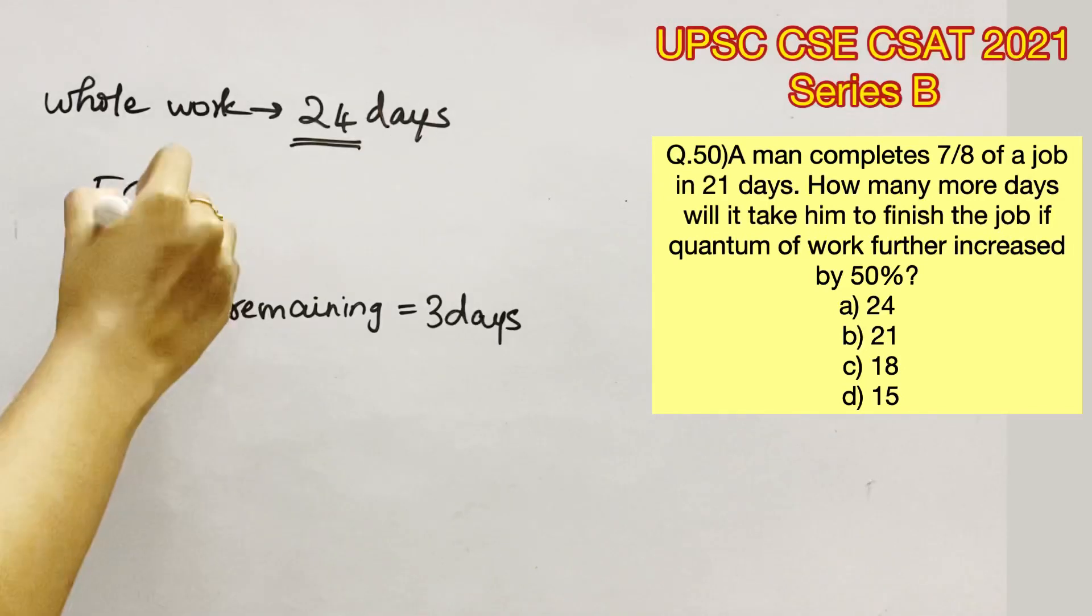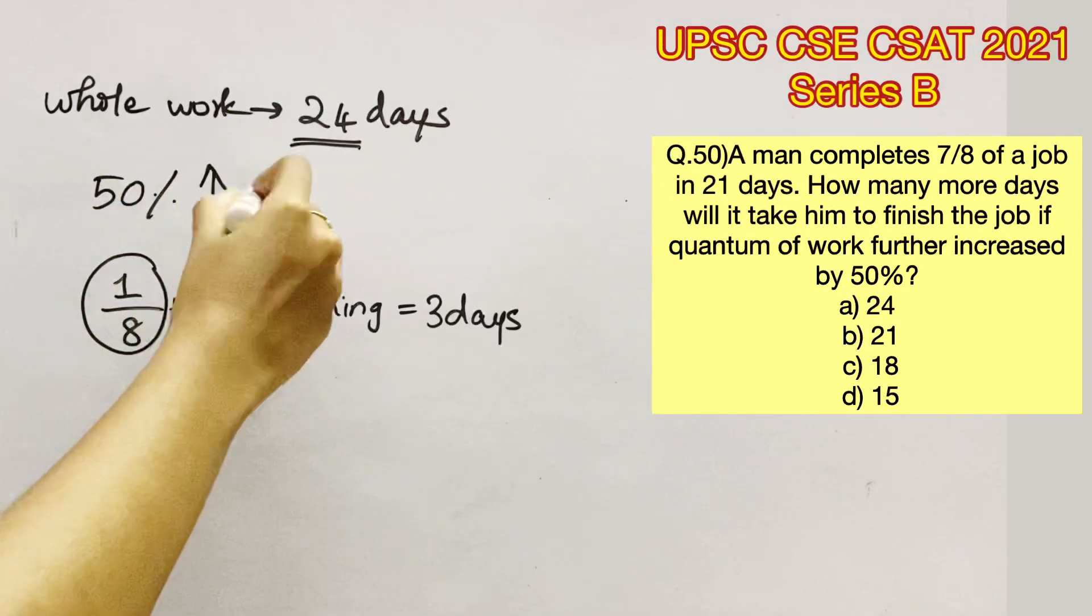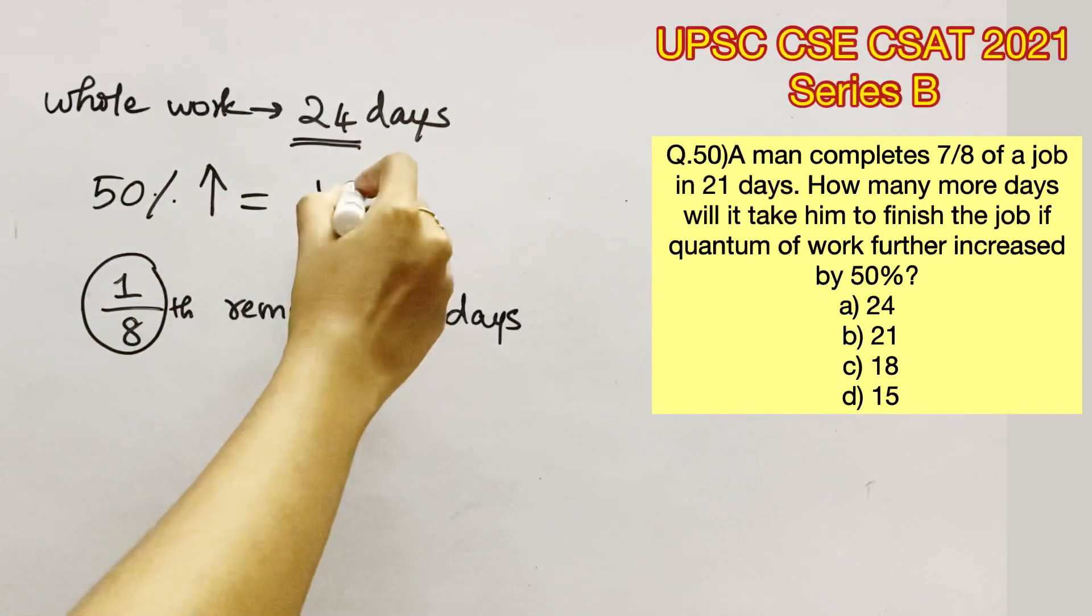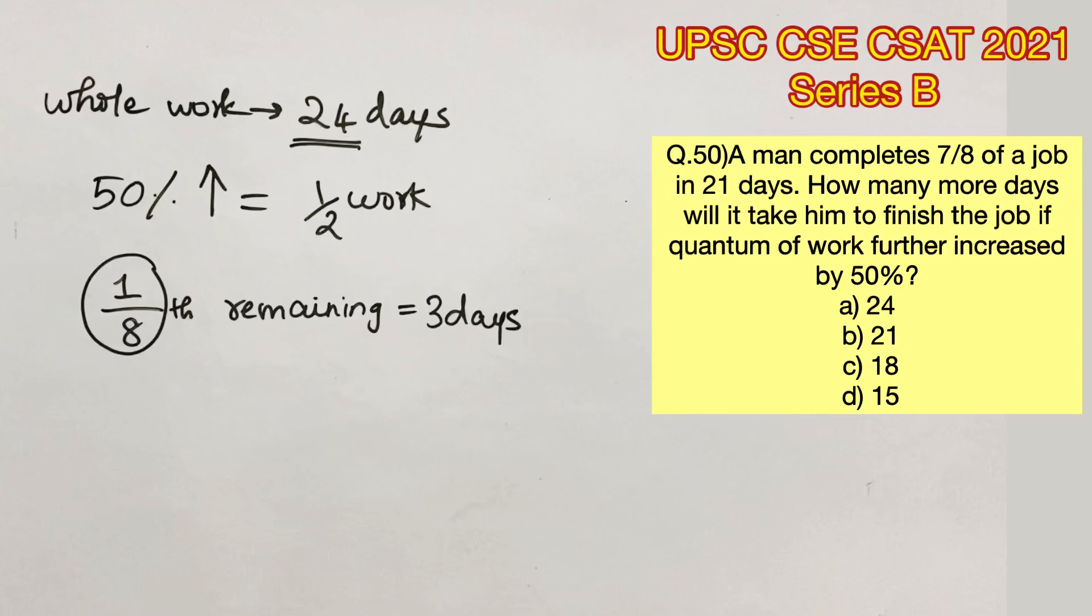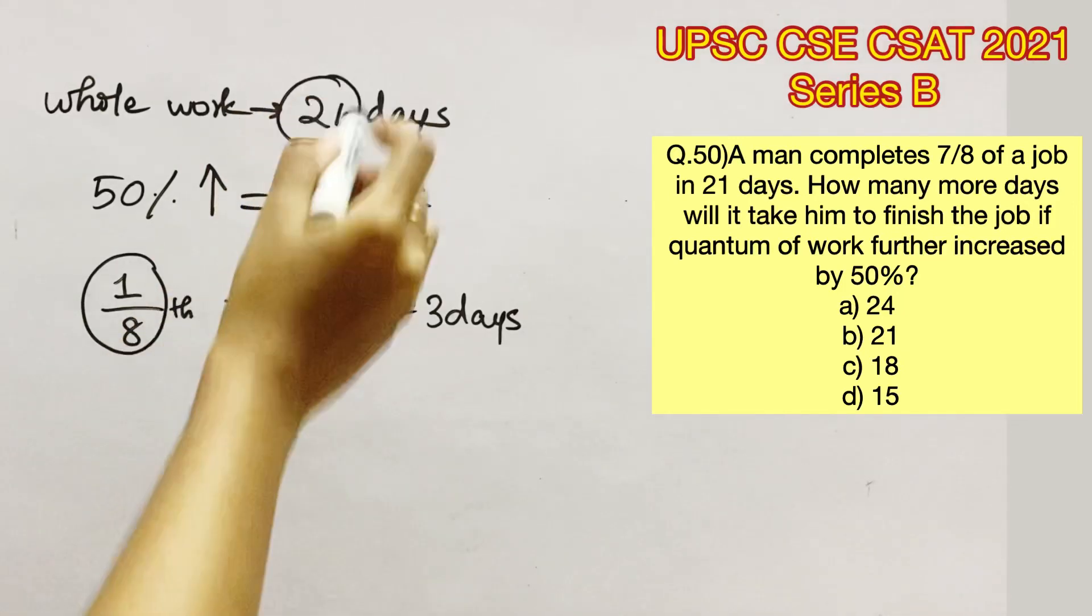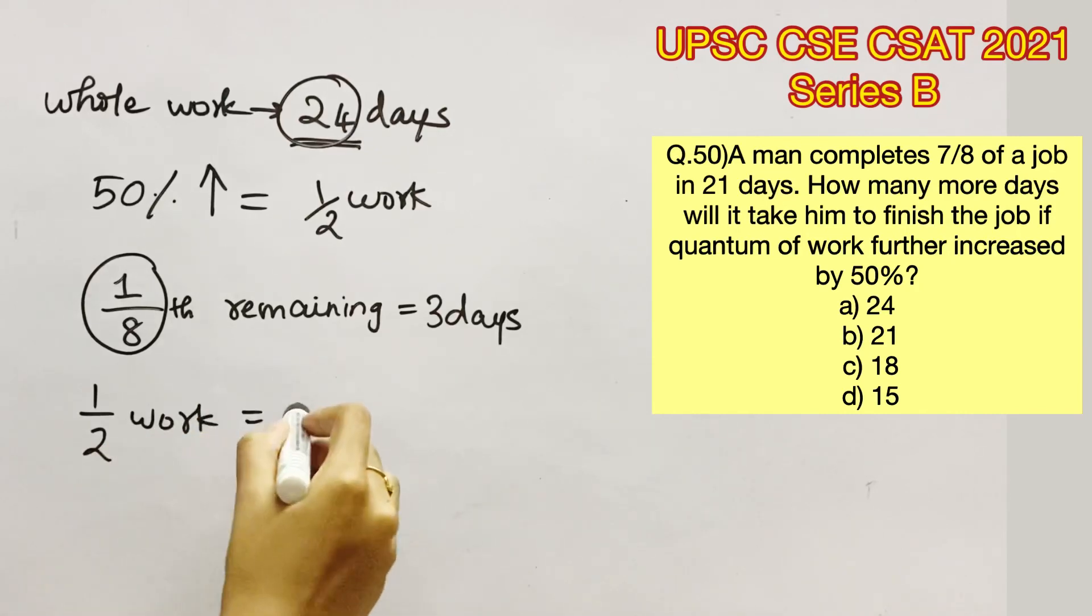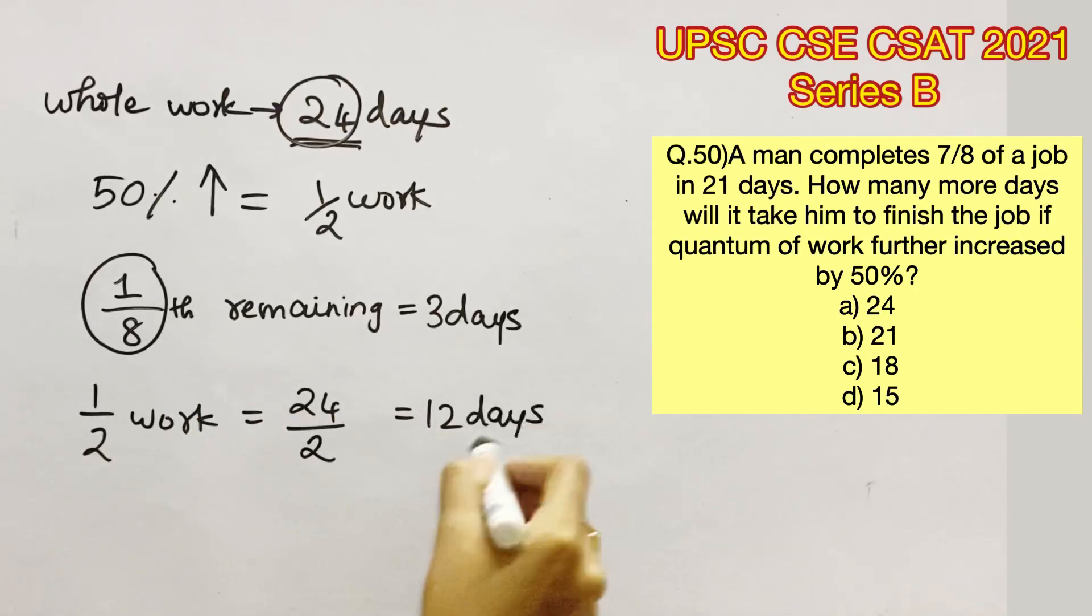Now it is said that the quantum of work is further increased by 50%. We know that 50% is nothing but half of the work. So half of the work has been additionally added to this man. We know that the whole work takes 24 days to complete. So half the work is going to take 24 by 2, that is 12 days to complete.